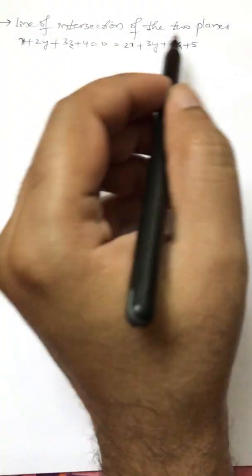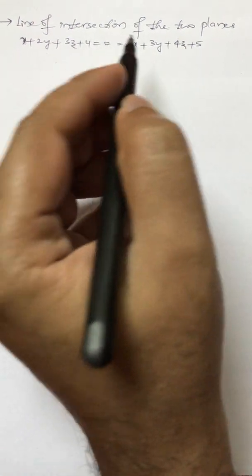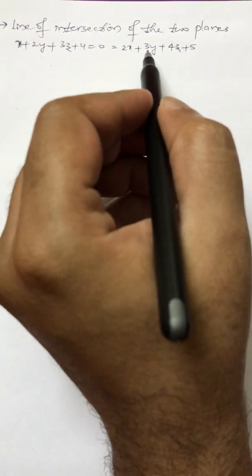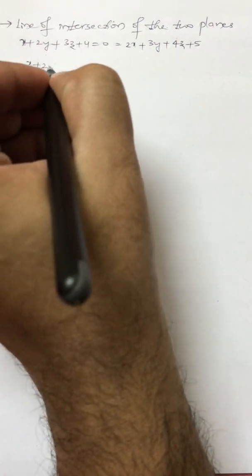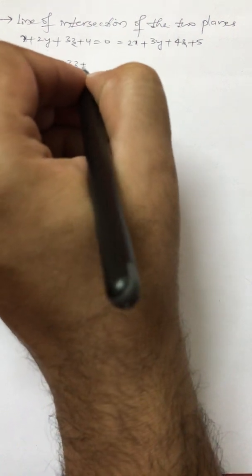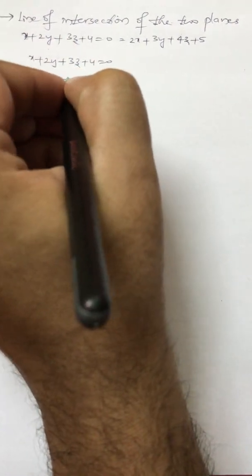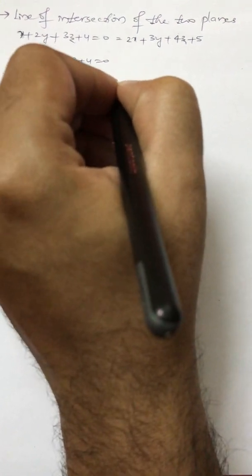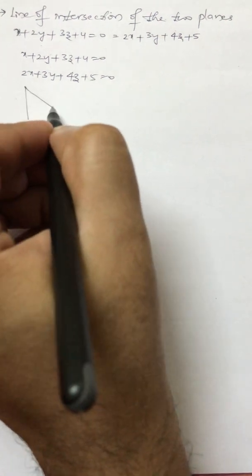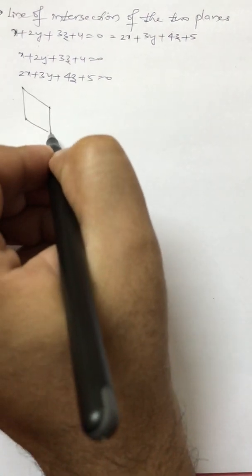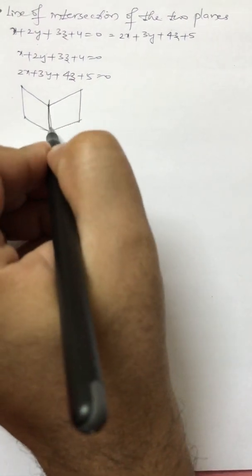Now we will look at the line of intersection of the two planes: x plus 2y plus 3z plus 4 equal to 0, and the other plane is 2x plus 3y plus 4z plus 5 equal to 0. So we have two planes, and we want to find the line of intersection of these two planes. If these two planes intersect like this, we will get a line, and this line is what we are looking at.